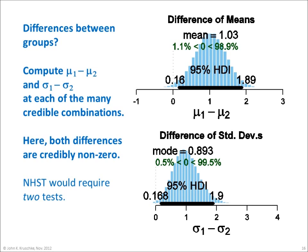When comparing two groups, we usually are interested in the magnitude of differences between groups. The MCMC chain provides a huge sample of credible differences. We compute mu1 minus mu2 and sigma1 minus sigma2 at each of the many credible combinations. The histograms show the distributions of those credible differences. Here, both differences are credibly non-zero, because the 95% HDI clearly excludes a difference of zero. Notice that null hypothesis significance testing would require two tests and corrections for multiple testing, whereas Bayesian estimation provides both results simultaneously.